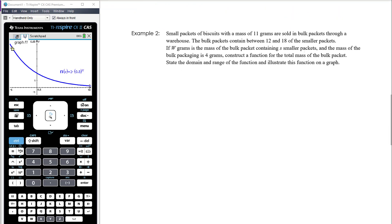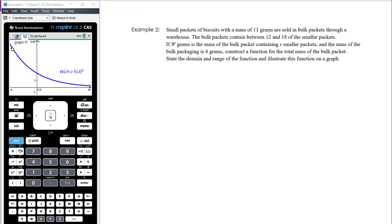Now let's look at the second example. We need to formulate the function that describes what's happening. Small packets of biscuits with a mass of 11 grams are sold in bulk packets through a warehouse. The bulk packets contain between 12 and 18 of the smaller packets. If w grams is the mass of the bulk packet containing s smaller packets, and the mass of the bulk packaging is 4 grams, we want to describe w in terms of s, so our function is w of s.